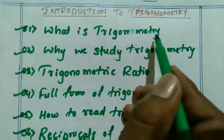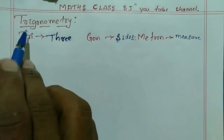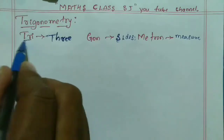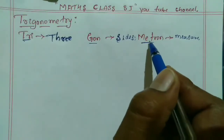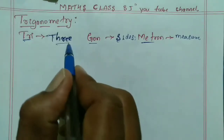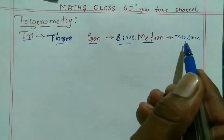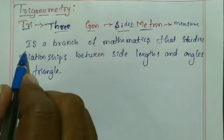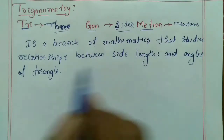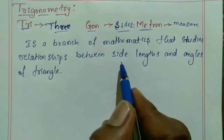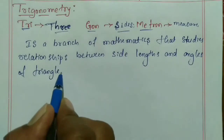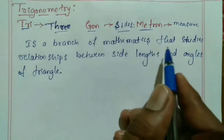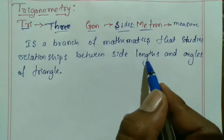The word trigonometry is derived from Greek — 'tri' means three, 'gon' means sides, and 'metron' means measurement. So it means three-sides measurement. Trigonometry is a branch of mathematics that studies relationships between side lengths and angles of a triangle.